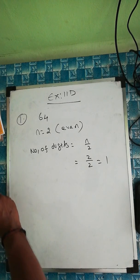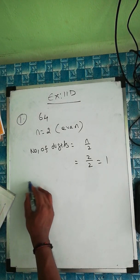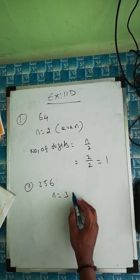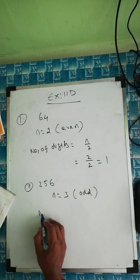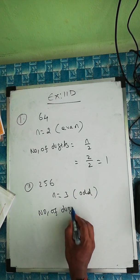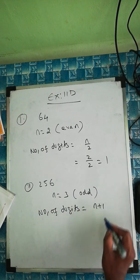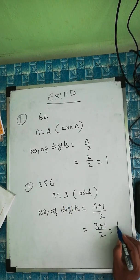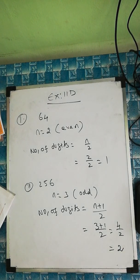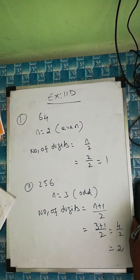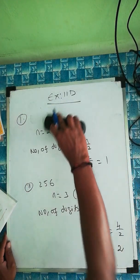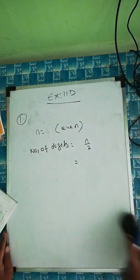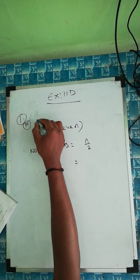The second question is 256. So n equals how many digits? One, two, three — three digits. Three is an odd number. For odd numbers, the formula is: number of digits equals n plus one, divided by two. Here n is three, so three plus one by two equals four by two equals two. So the number of digits is two. The next question, number three, is 4489.